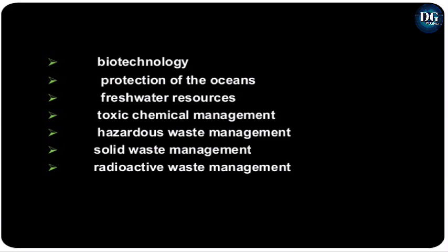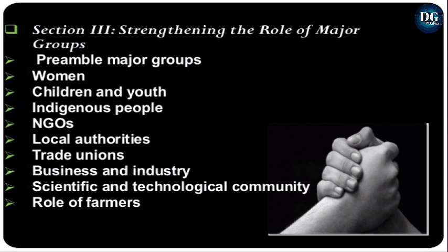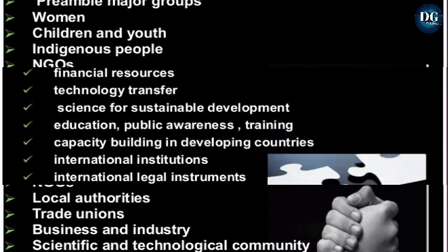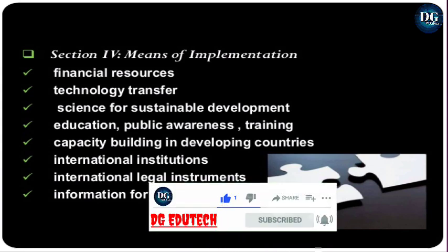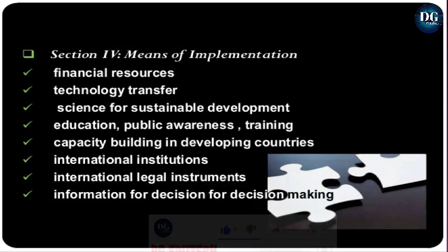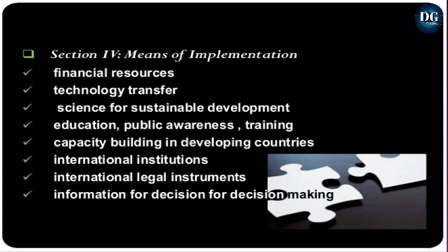Section 2 also covers conservation of biodiversity, biotechnology, protection of the oceans, freshwater resources, hazardous waste management, solid waste management, and radioactive waste management. Section 3 strengthens the role of major groups, dealing with women, children and youth, indigenous peoples, NGOs, local authorities, trade unions, business and industry, the scientific and technical community, and the role of farmers. Section 4 deals with means of implementation, including financial resources, technology transfer, science for sustainable development, education, public awareness, training, and capacity building in developing countries.